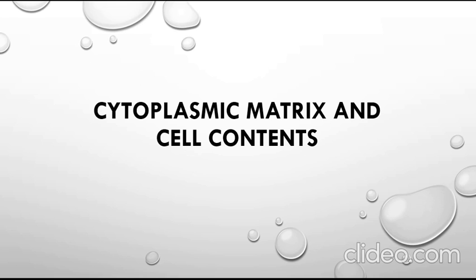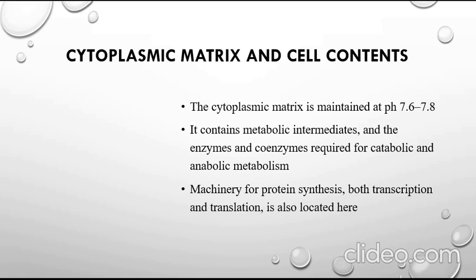The cytoplasmic matrix of a prokaryotic cell is maintained at pH 7.6 to 7.8, which is neutral pH. It consists of metabolic intermediates and the enzymes and coenzymes required by catabolic and anabolic metabolism.